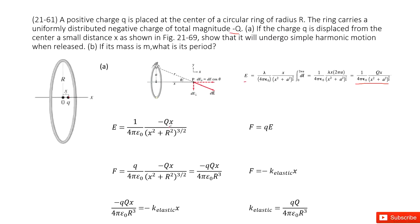Now we put a point charge there, and there will be an electric force on it. The electric force equals the point charge q times the electric field E. We input E into this expression to get the electric force as a function. By definition, simple harmonic motion requires the net force to equal negative k times x, where k is the elastic constant and x is the displacement from the equilibrium origin.